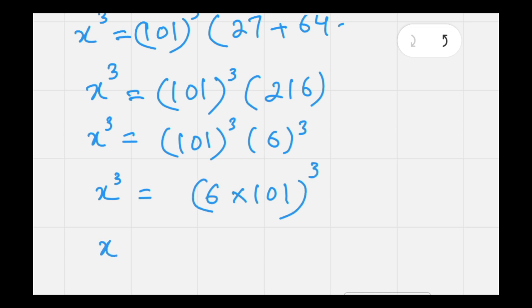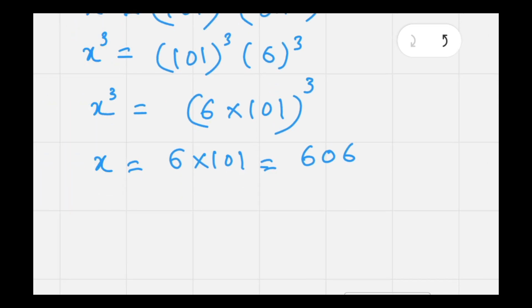Taking cube root on both sides, we have 6 times 101, which is actually 606, which is the value of x. That's it, thanks for watching this video. I hope to see you in the next video.